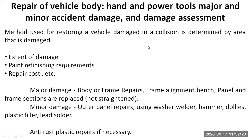Moving on, there are different major damages to the body. These include body or frame repairs — for example, in a severe crash the entire chassis might have to be replaced, which may happen with two-wheelers. You also have various frame alignment benches, and panels and frame sections which have to be replaced when they cannot be straightened — if the damage is such that repair is not possible, they have to be replaced directly.